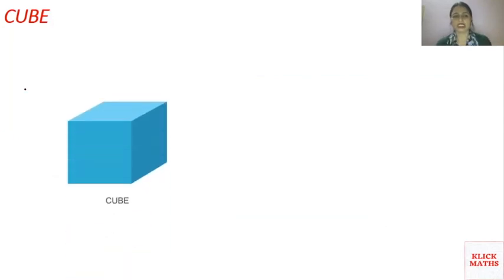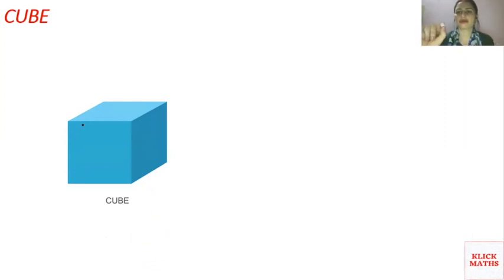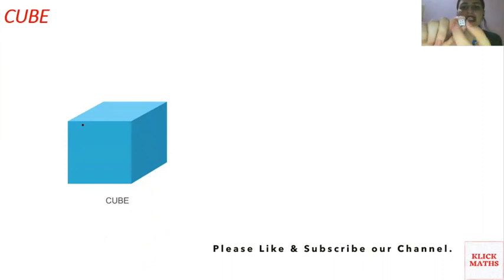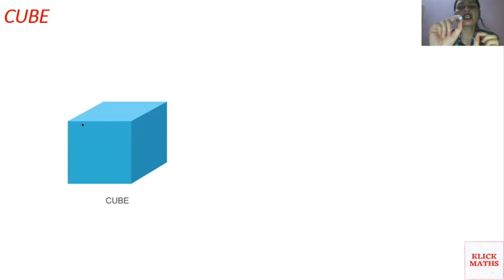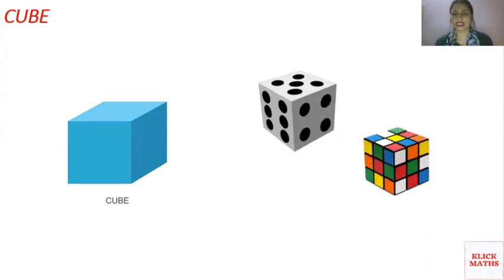The next shape is a cube. The base of a cube is a square shape and all sides of the cube are equal. You can see this dice — all sides are equal. A cube has six faces, twelve edges, and eight vertices. The vertex is the meeting point of two lines. This is also a cube — you can count six faces and eight vertices.